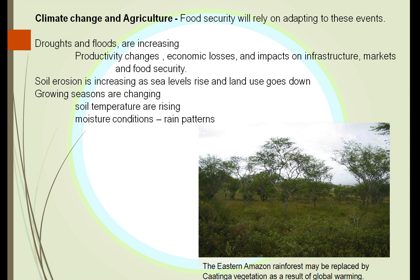Droughts and floods are increasing throughout the world, changing our productivity and causing huge economic losses. When Katrina hit New Orleans, we destroyed more and more of the outlying islands and land which protected the area. We are losing 50 miles a year of land outside of New Orleans. This allows water to come in more and more, causing more damage. We need to protect these islands and this land to prevent soil erosion.